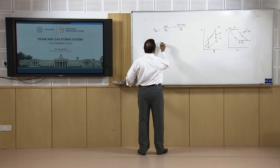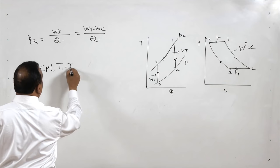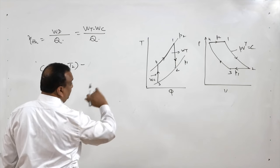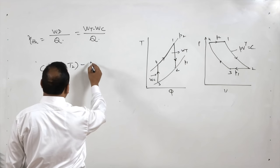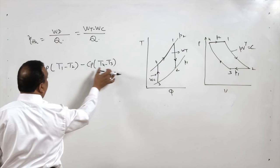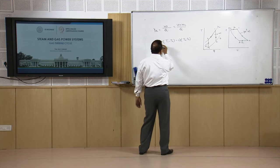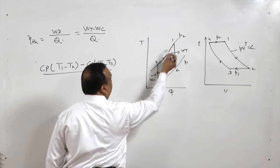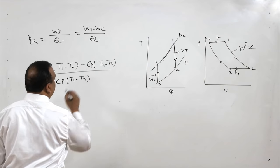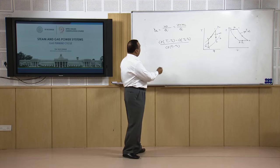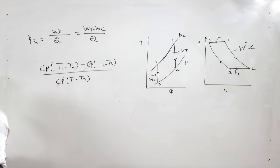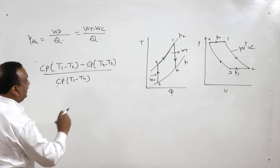So turbine work is Cp(T1 − T2). Work consumed by the compressor is Cp(T4 − T3), and this much work is taken out to run the compressor. Net heat supplied is this constant pressure process, and it is also Cp(T1 − T4).